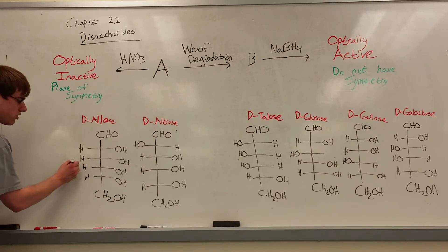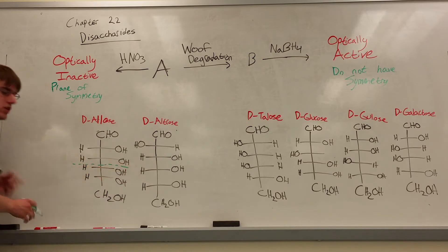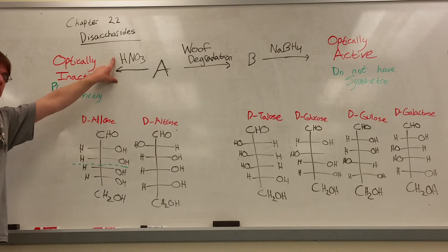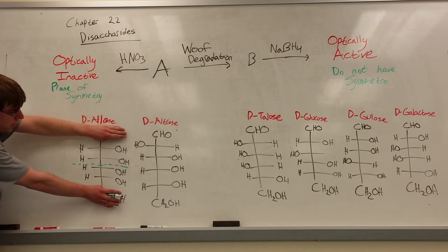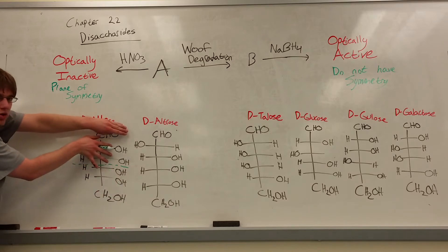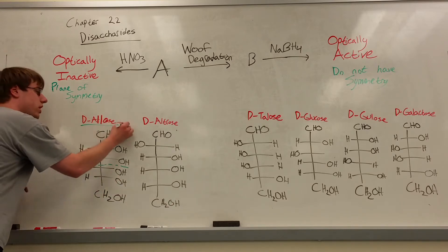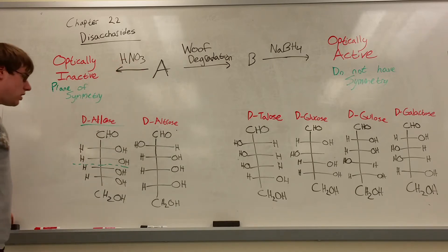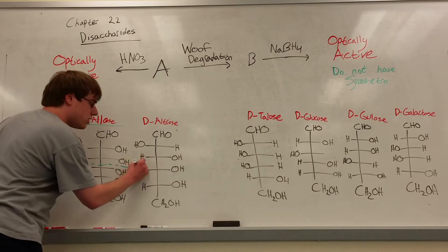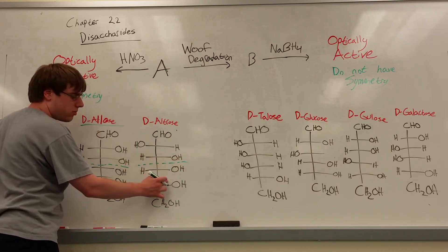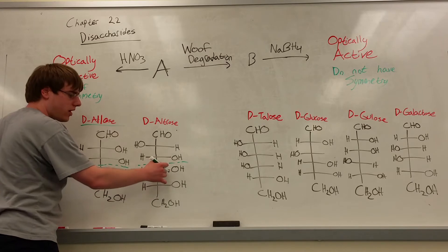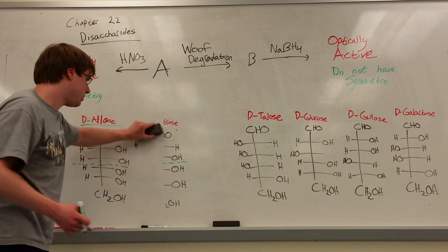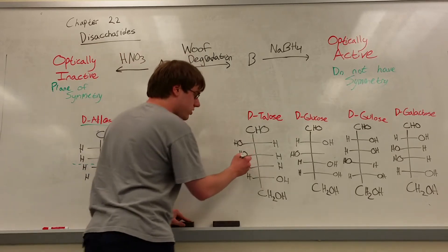D-allose, however, when we draw a dotted line through the center and it becomes the aldaric acid after reacting with HNO3, the OHs match up — two OHs on the right on each half. So D-allose is a possible answer and brings structure A to an optically inactive molecule. Meanwhile, D-altrose has two OHs on one half but only one OH on the right on the top half, so D-altrose is ruled out.